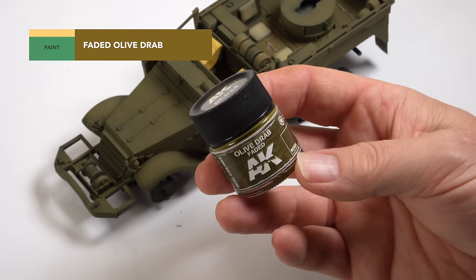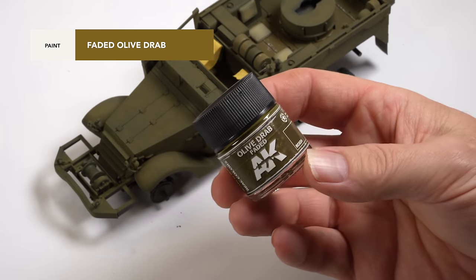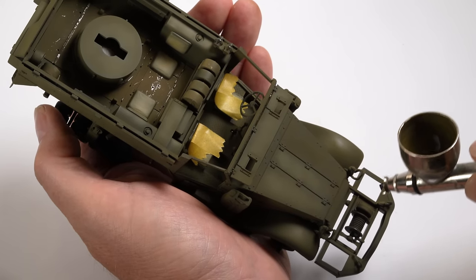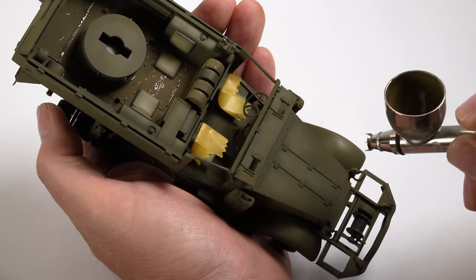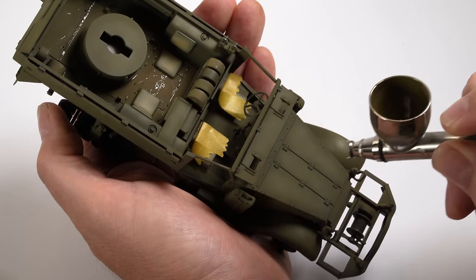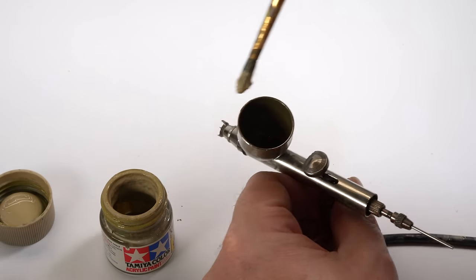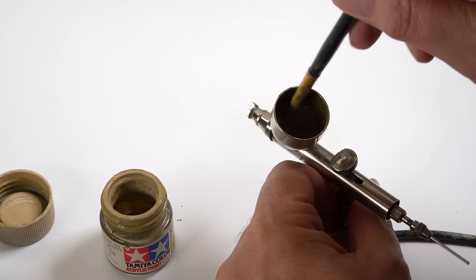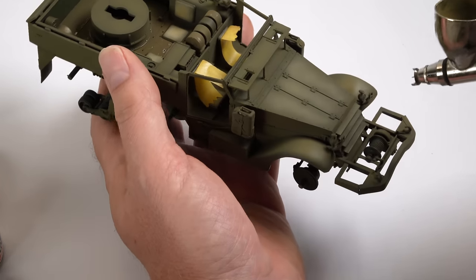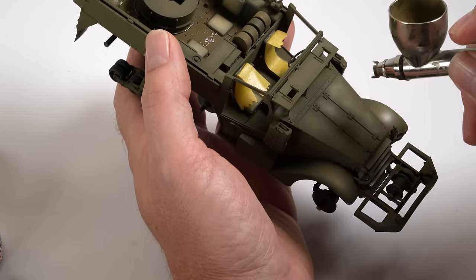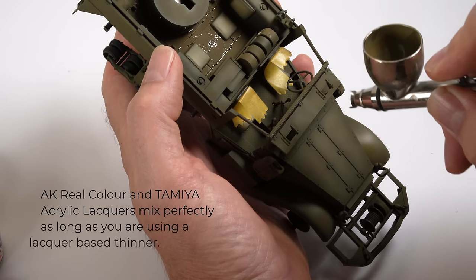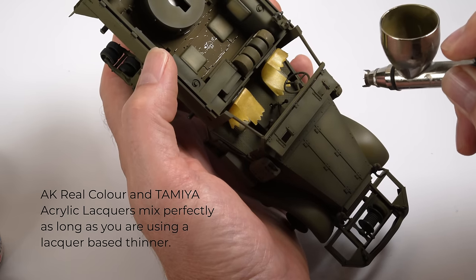An AK color called Faded Olive Drab is then used for my highlights. I'm focusing on the centers of the panels as well as horizontal surfaces. The contrast that that color was giving me was a little too close to the base layer though, so a touch of buff was added to the mix and this was then applied in an even smaller area and used to enhance the layers below rather than to cover them up. The AK real color and the Tamiya paints mix perfectly, as long as you were using a lacquer base thinner as your thinning agent.